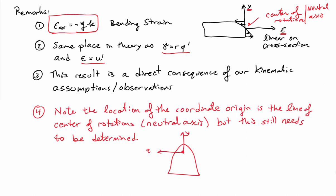The location of the coordinate origin is on the neutral axis, but we still have to determine where that origin actually is. The origin could be where it's drawn, or it could move anywhere along this vertical line of symmetry. We will have to determine that location using other information — specifically, from an equilibrium argument. So the neutral axis is not necessarily right at the geometric center of the cross-section.